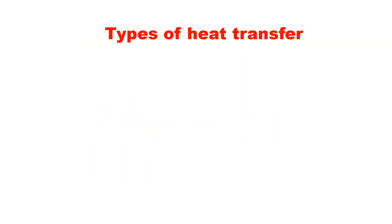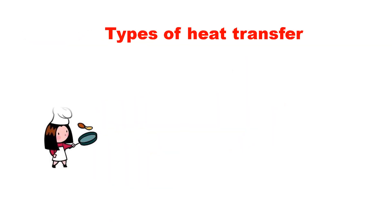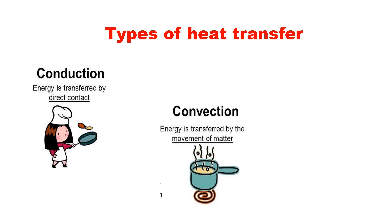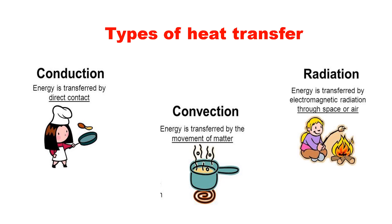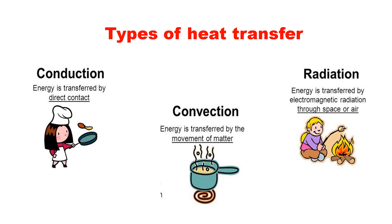Types of heat transfer. First, conduction, which is the energy transferred by direct contact. Second, convection, which is the energy transferred by movement of matter. Third, radiation, which is the energy transferred by electromagnetic radiation through space or air.